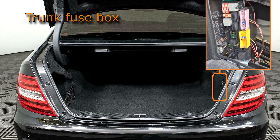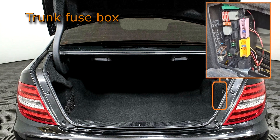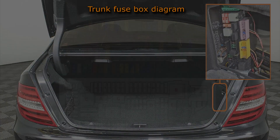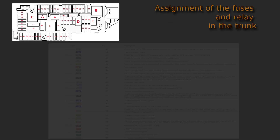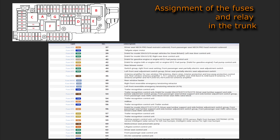Trunk Fuse Box: the fuse box is located in the luggage compartment, on the right side, behind the cover. Trunk Fuse Box Diagram. Assignment of the Fuses and Relay in the Trunk.